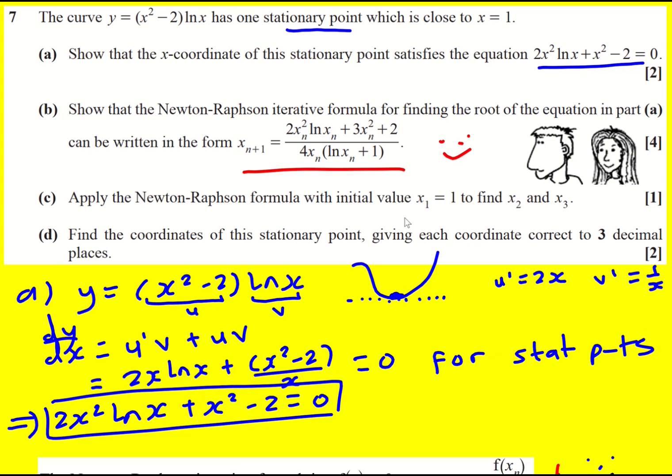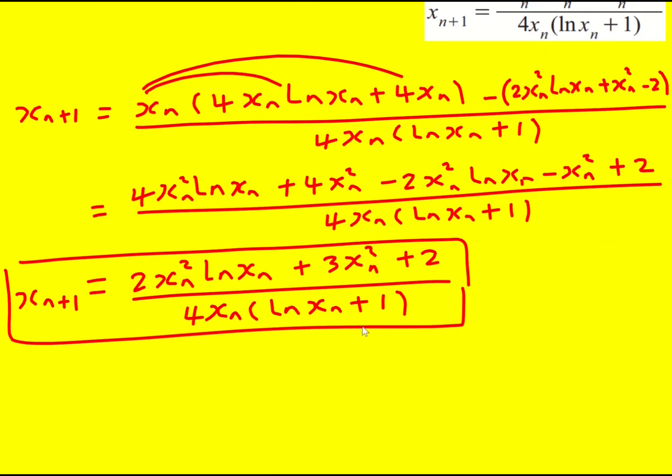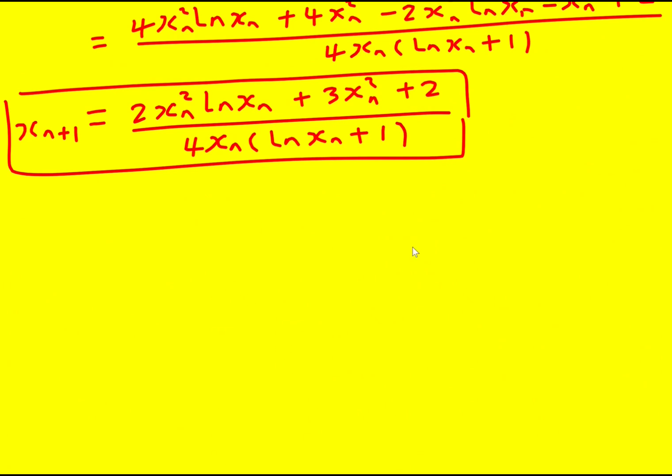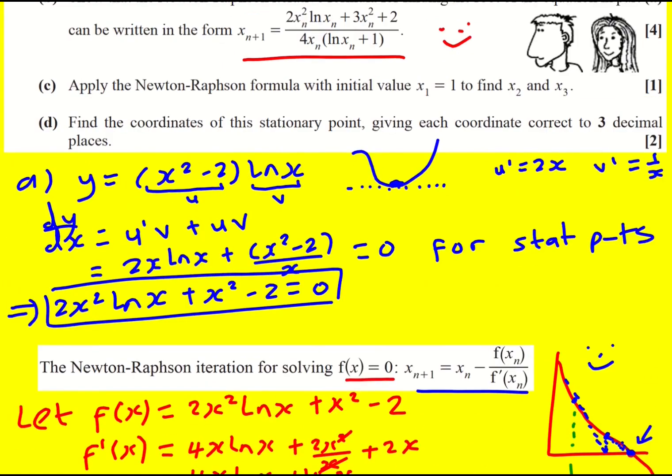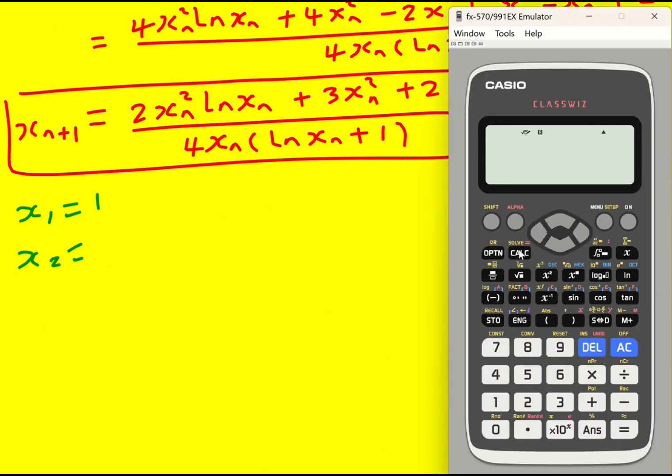So this just leaves the application. We're asked to apply the formula with an initial value of one. I'm putting in my one and I'm going to get more values and then I'm just going to get closer and closer to my solution. So x_1 is going to equal one, and we're asked to find x_2 and x_3. Now you don't need to write down that you are substituting one into here. This is just a calculator question now. So the way to do it is that you put one as your answer, and then everything is in terms of our answer because we're going to get a new answer and then that's going to go straight back in.